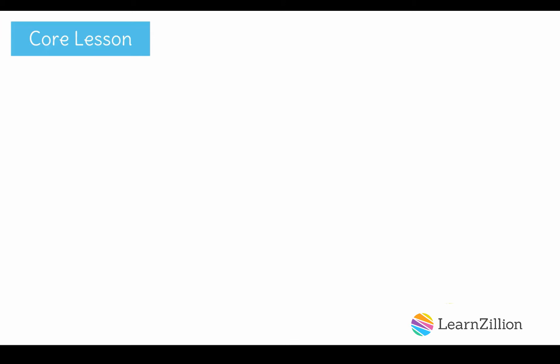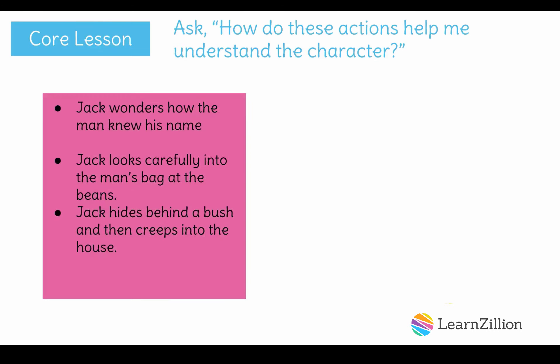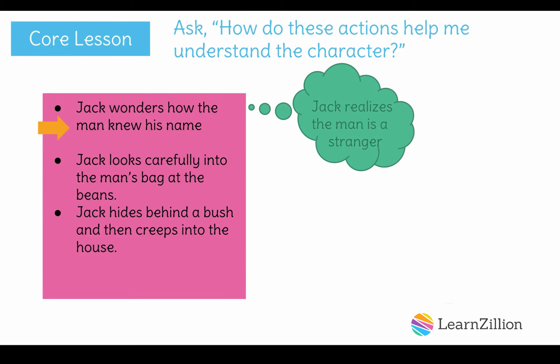The next step is to ask yourself: how do these actions help me understand the character? I need to think about the three details I noticed in the text and illustrations. First, I read that Jack wondered how the man knew his name. This tells me that Jack realizes the man is a stranger to him and should not know his name.